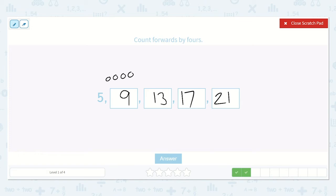Great. So counting on by fours, it goes five, nine, 13, 17, 21.